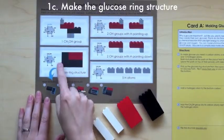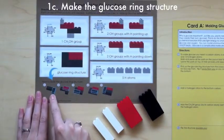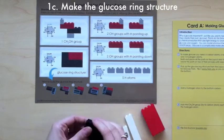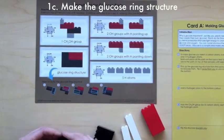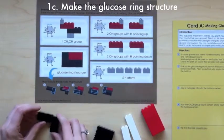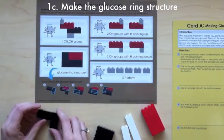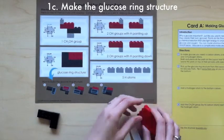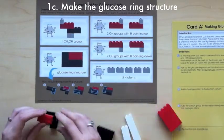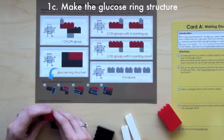Start with the glucose ring structure. Follow the arrow to the step-by-step directions at the bottom of the mat. The new brick to be added in each step is outlined in blue.